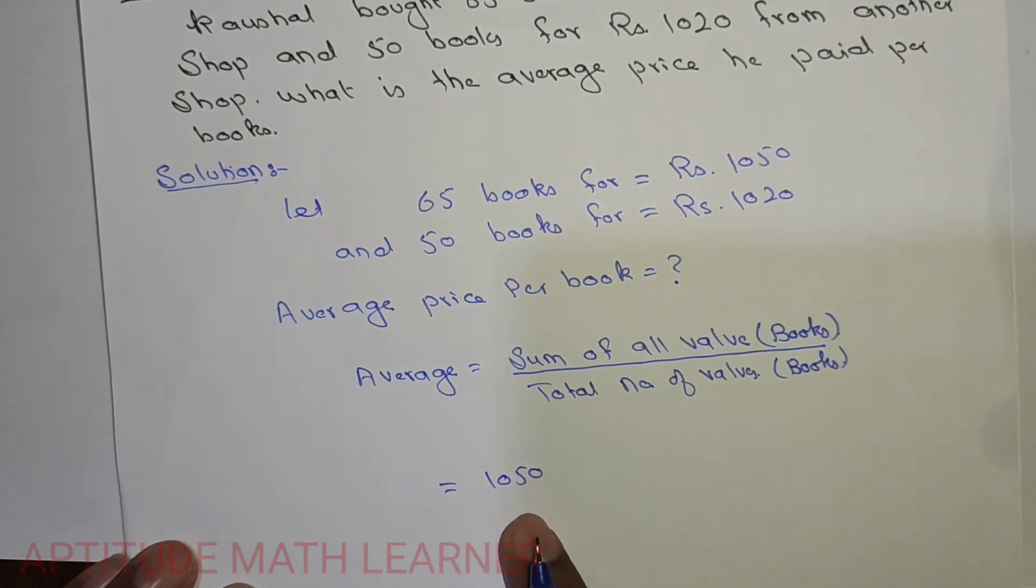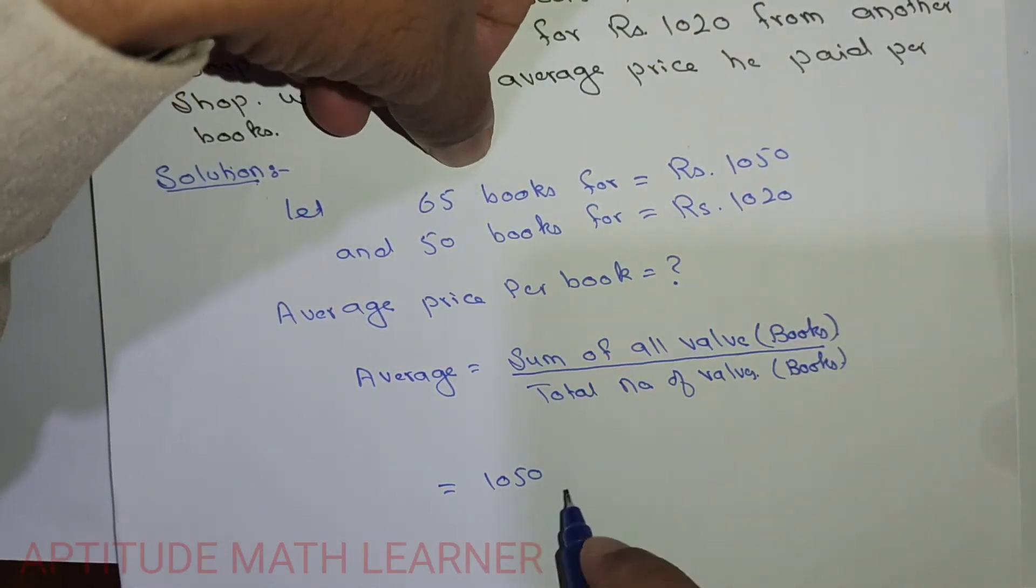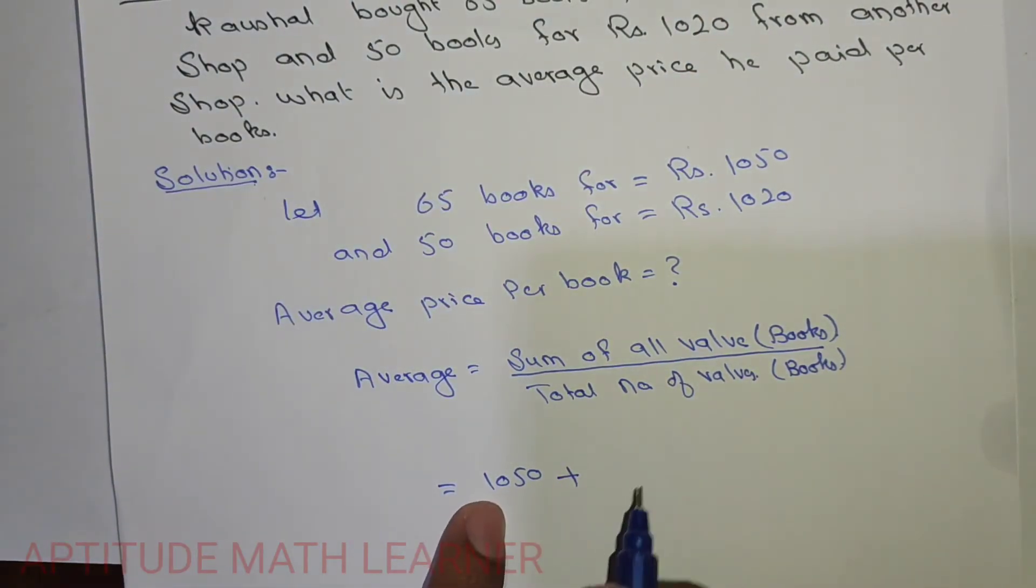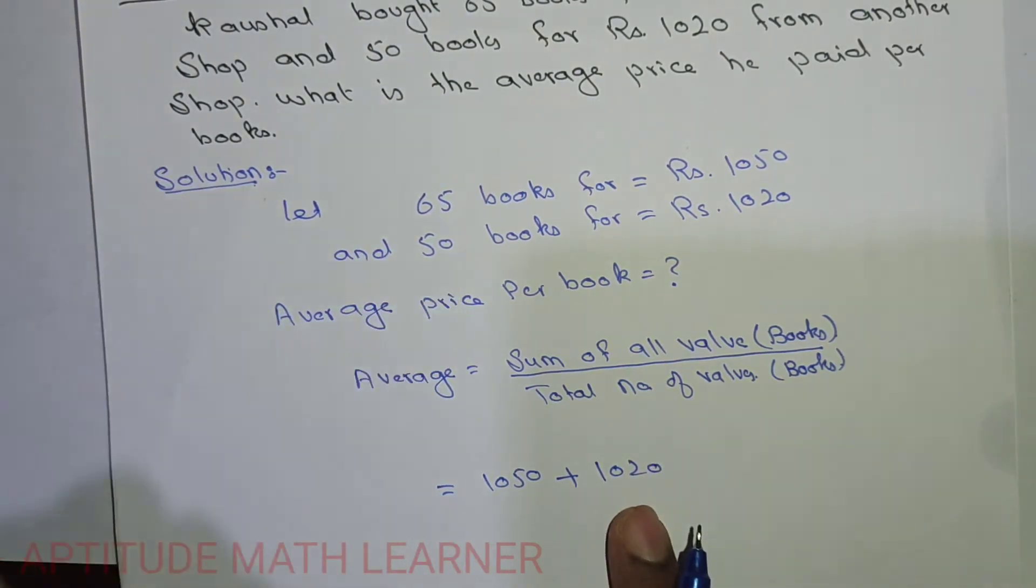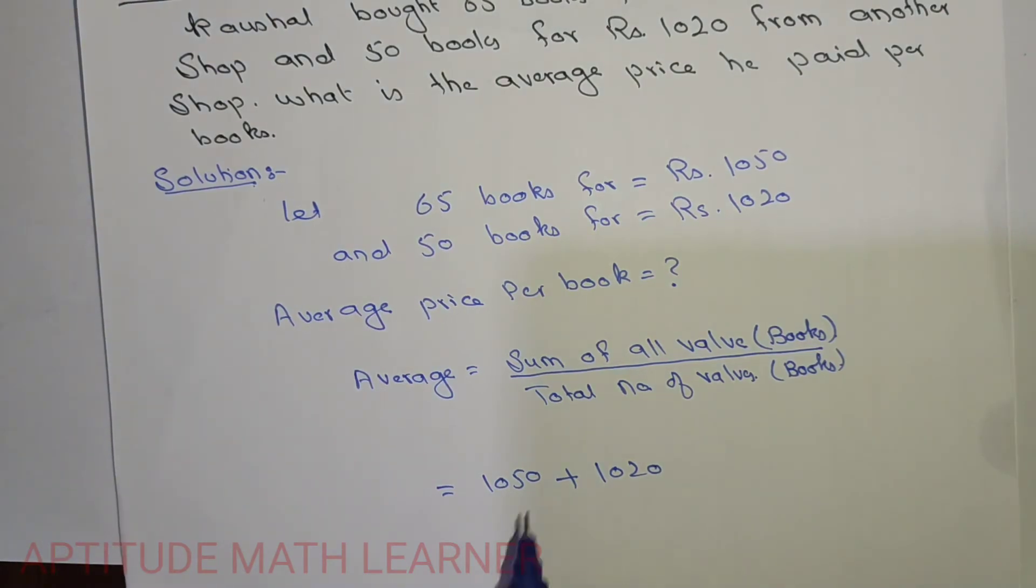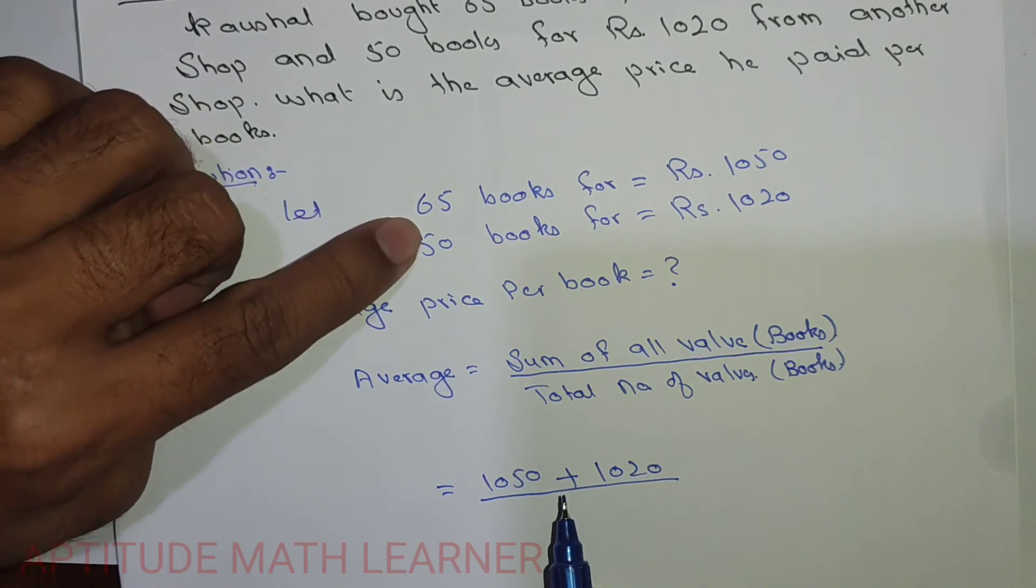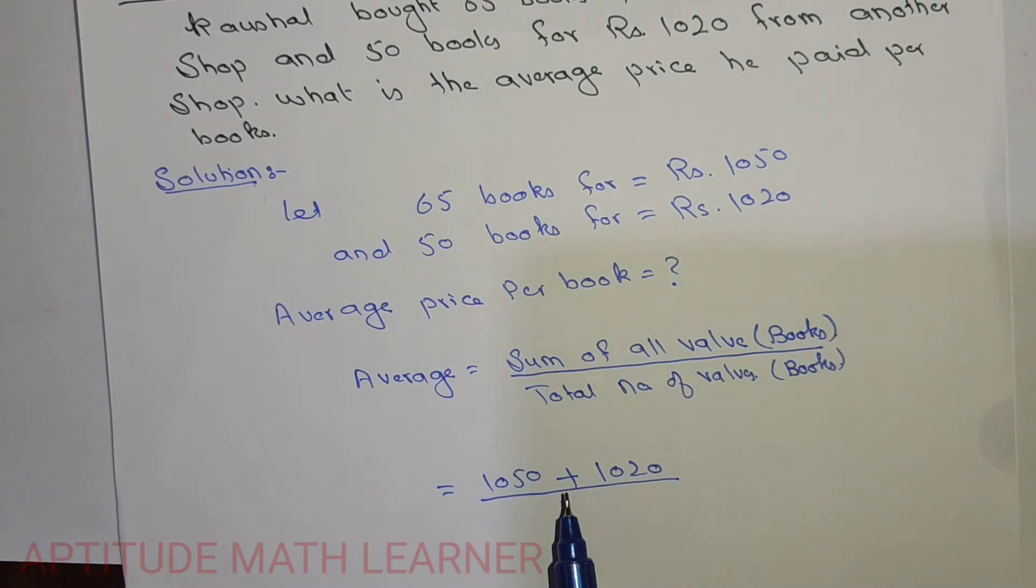So 1050 for 65 books plus 1020 for 50 books. So how much are the total number of books? Total number of books, that is 65 plus 50.